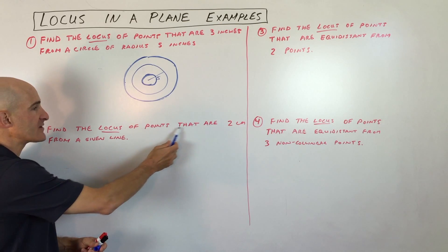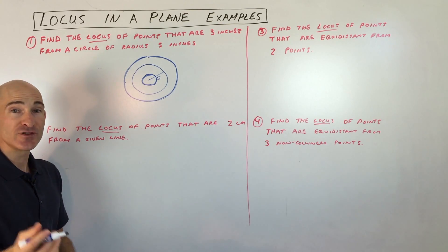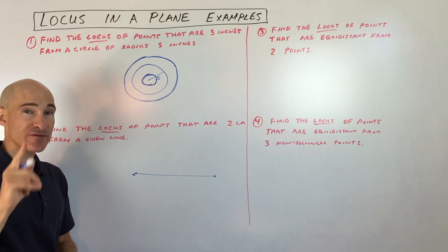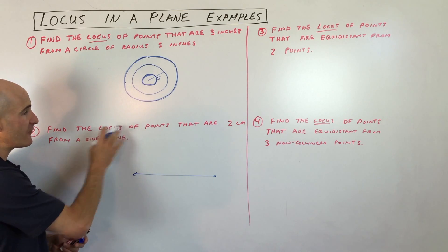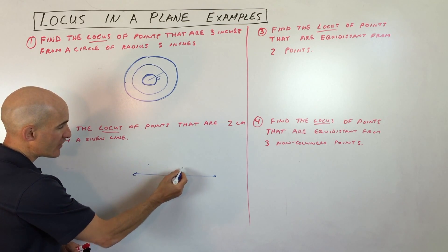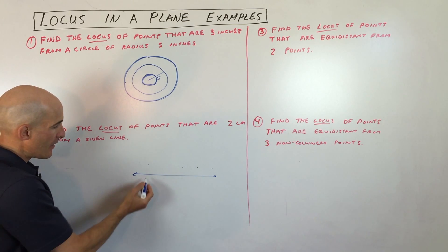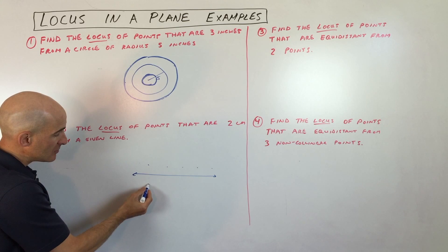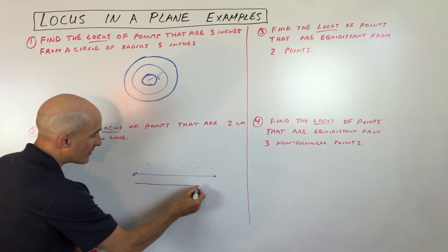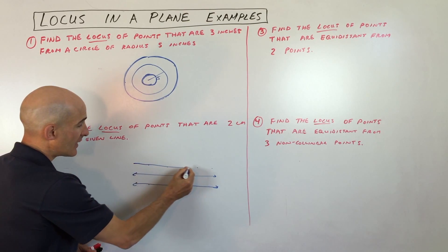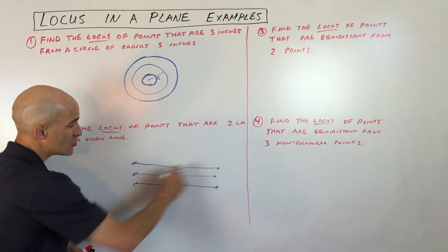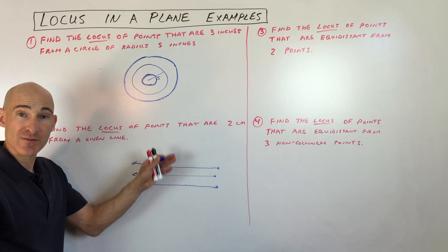The next example: find the locus of points that are two centimeters from a given line. Draw that line. Find one point that's two centimeters away, then another, and another. You can also go down on the other side of the line — also two centimeters away. You end up with two parallel lines, one above and one below the given line, two centimeters away — so four centimeters apart total.